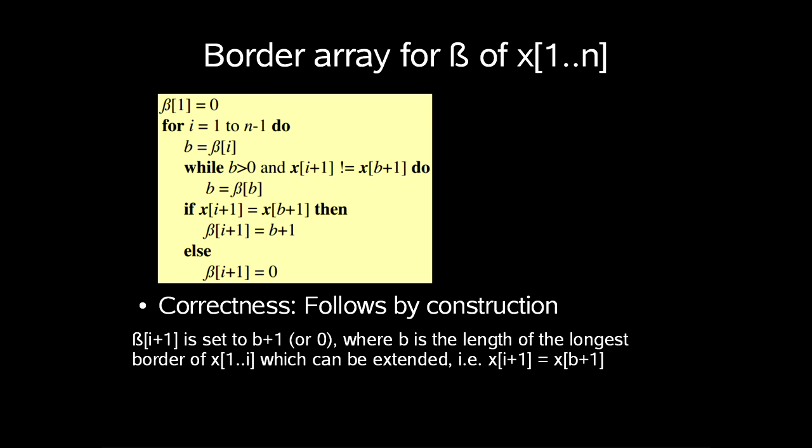The pseudocode here describes how to build the border array beta of x1 up to n. The correctness of this algorithm follows by construction. Entry i plus 1 in beta is set to b plus 1 or 0 at entry 1, where b is the length of the longest border of x1 up to i which can be extended, i.e. entry i plus 1 of x is set to entry b plus 1 of x.